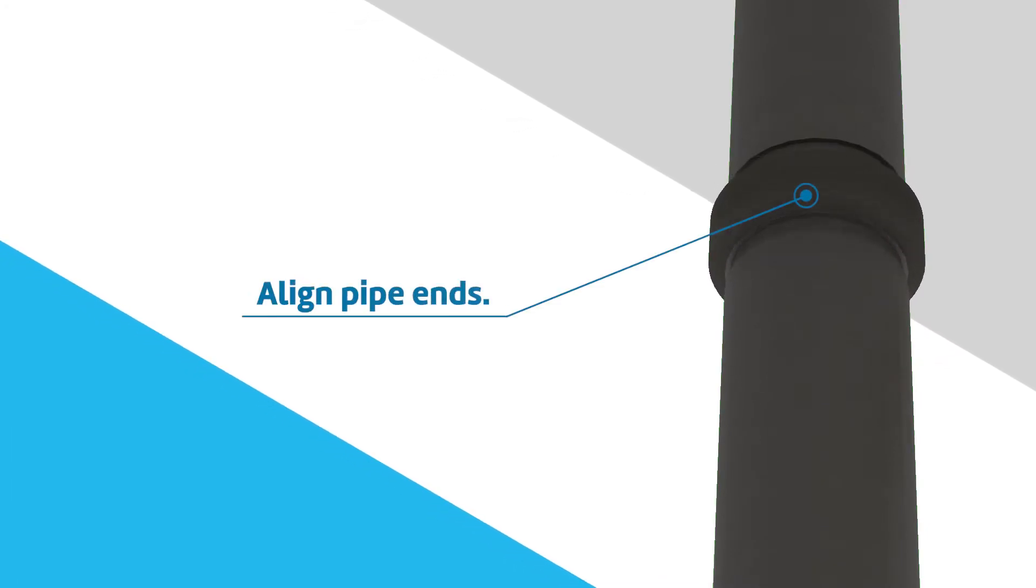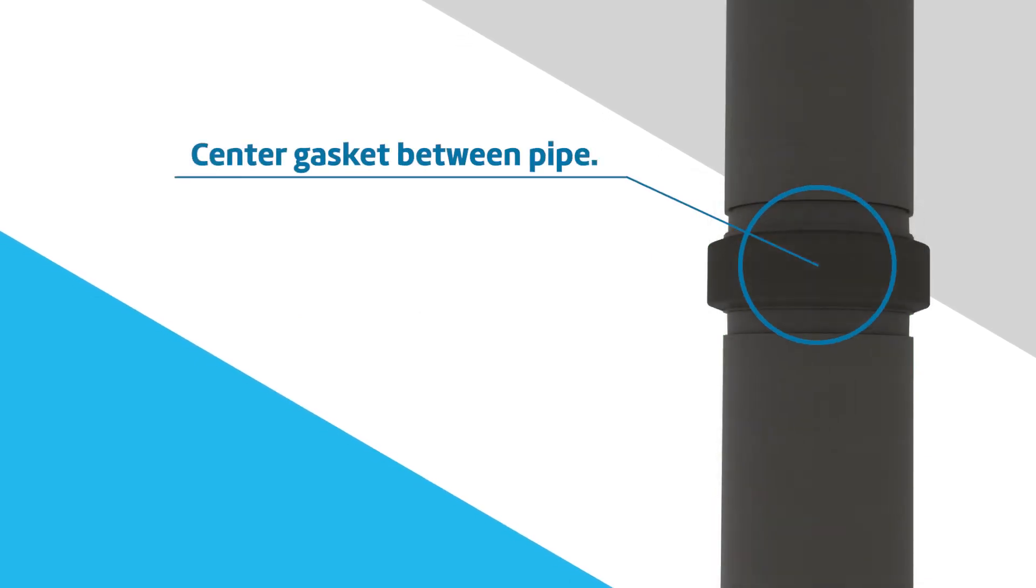Align the two pipe ends and pull the gasket into position, centering it between the grooves on each pipe. The gasket should not extend into the groove on either pipe.